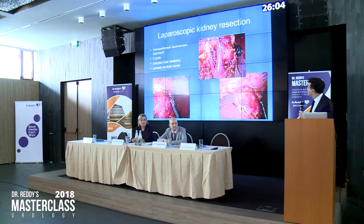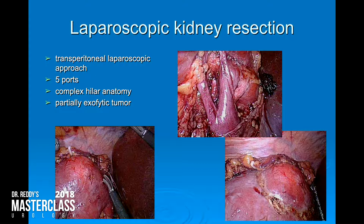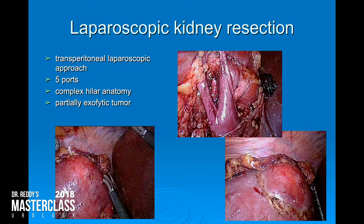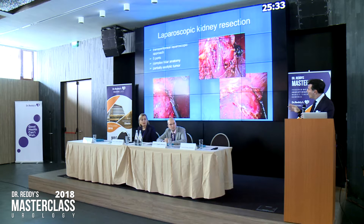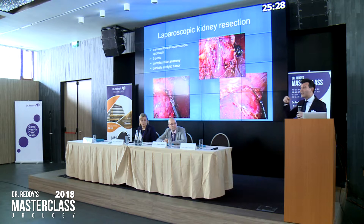We did a laparoscopic kidney resection of the tumor transperitoneally using five ports. The hilar anatomy was kind of difficult because the branching of the artery was very close to the tumor — he had a lot of branches and sub-branches. The main artery was also branched in three. The tumor was only partially exophytic, so it was already difficult to see macroscopically, although on MRI it looked very nice.